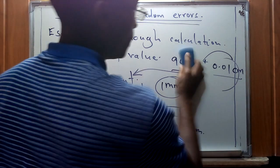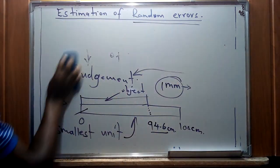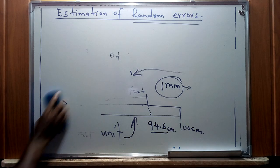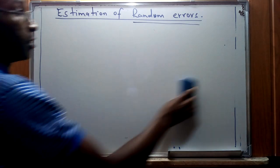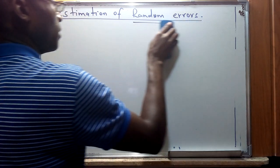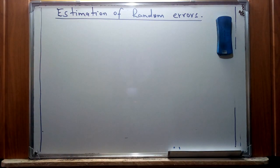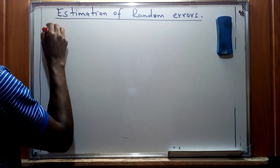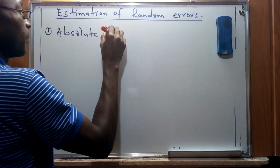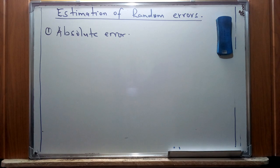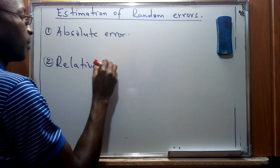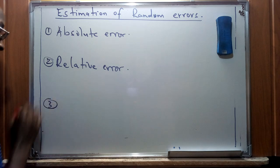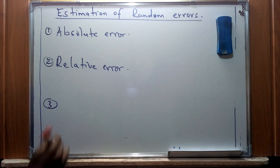We need a standard procedure that is understandable and will assist us to express random errors. There are three specific examples. The first one is expressing it as an absolute error. The second is expressing it as a relative error. And lastly, we will look at what is referred to as percentage relative error.